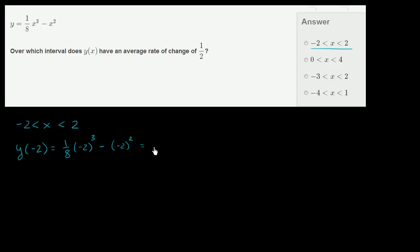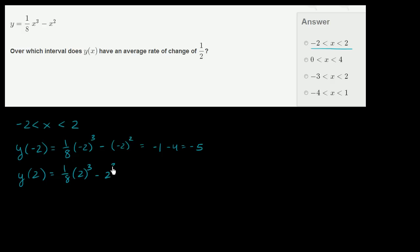Negative 8 divided by 8 is negative 1. Negative 2 squared is positive 4, but then you're going to subtract that, so it's minus 4. So this is equal to negative 5. And y of 2 is equal to 1/8 times 2 to the third power minus 2 squared, and that's going to be equal to 1/8 times 8 is 1, minus 4, which is equal to negative 3.